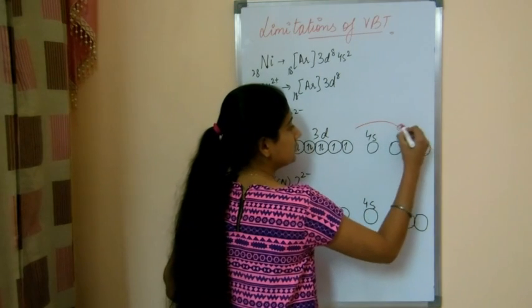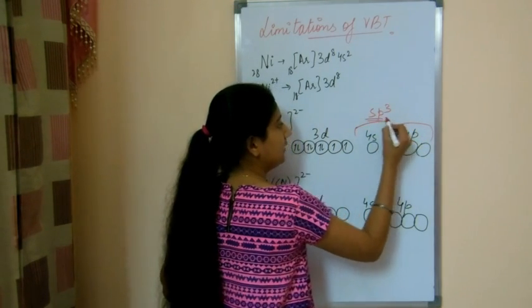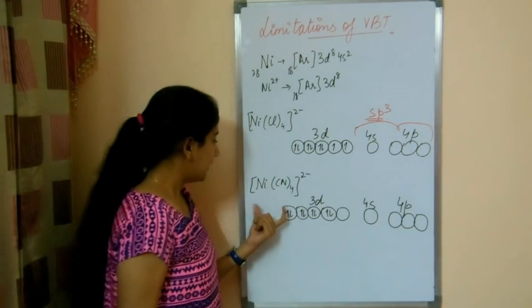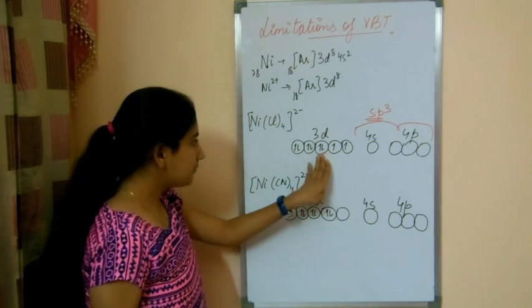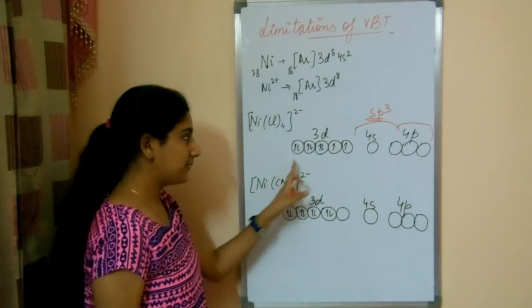So here these 4 orbitals hybridize and give sp3 hybridization, which means tetrahedral geometry. But in this complex we can see that the same thing should happen because the configuration of nickel will be the same, plus 2.